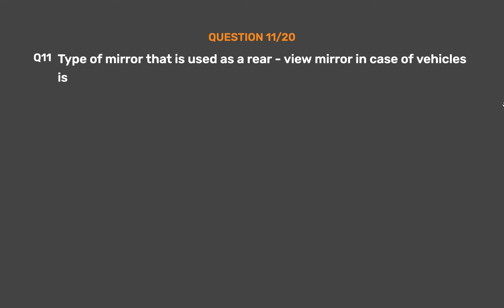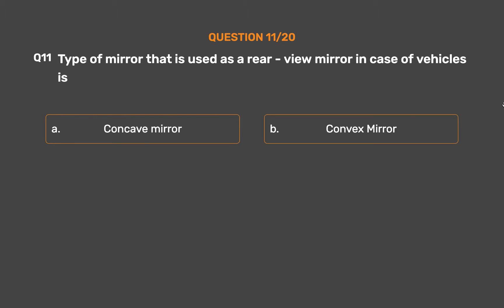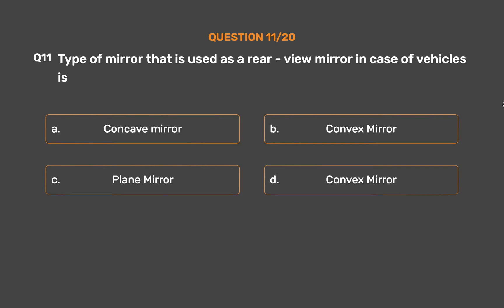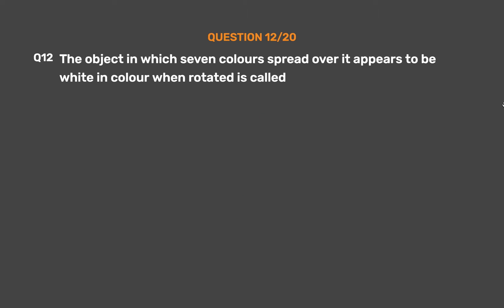Question number 11. Type of mirror that is used as a rear view mirror in vehicles is: option A, concave mirror; option B, convex mirror. The correct answer is option B, convex mirror.